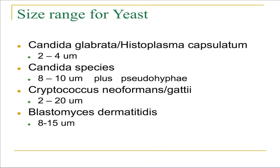A size range comparison of yeast species: Candida glabrata, Histoplasma, and Malassezia furfur are in the range of 2 to 4 microns. Most Candida species are 8 to 10 microns and can have pseudohyphae. Cryptococcus neoformans is extremely variable, usually 2 to 20 microns. Blastomyces dermatitidis is 8 to 15 microns and is known for its broad-based bud.